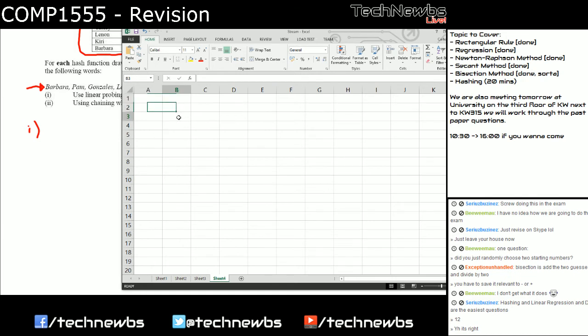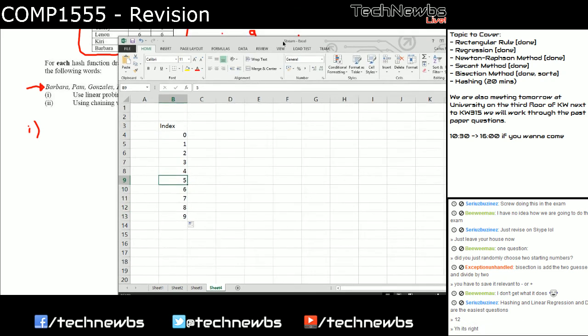You'll have a table with the indexes. So index, and you start at 0 and you go 1, 2, 3, 4, 5. You go up to 9 because N is 10, so you need 10 indexes. You start indexes at 0, and then you just fill out the words.